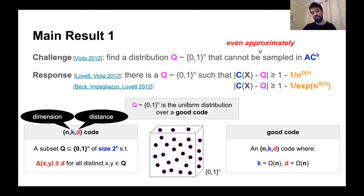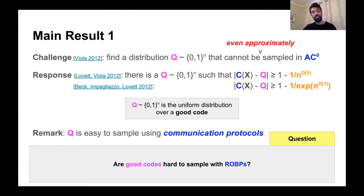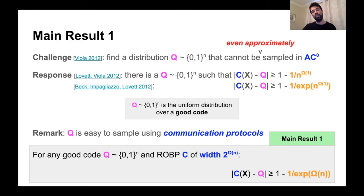While Lovett-Viola and Beck-Pagliazzo-Lovett show that AC0 circuits cannot sample good codes, it's actually very easy to show that good codes can be sampled using communication protocols. A natural question is: are good codes hard to sample with ROBPs? Our first main result answers this question in the positive. For any good code, or rather a distribution uniform over a good code, and any ROBP which has width 2^{0.01N}, the output distribution of that ROBP will be exponentially far from the good code.